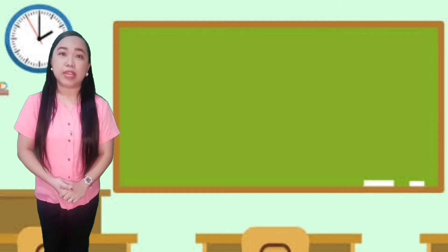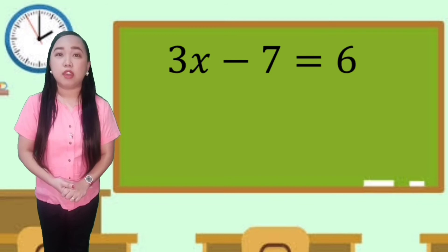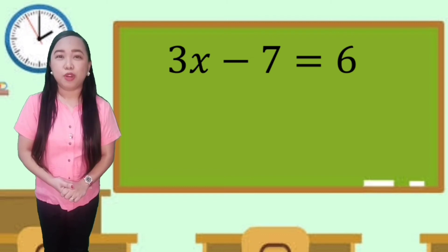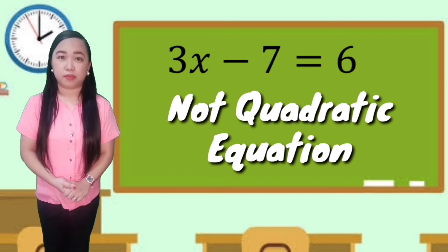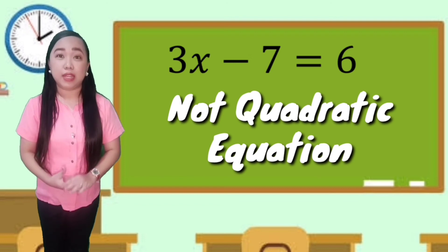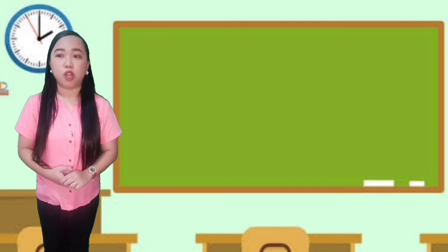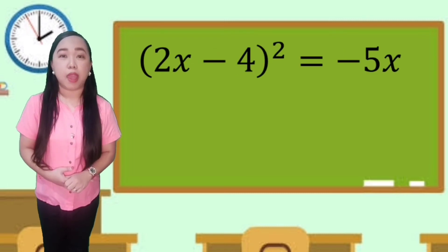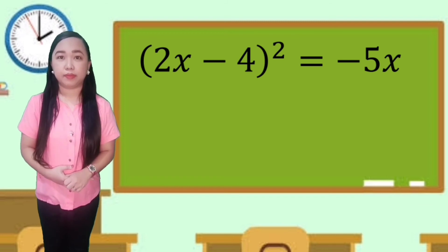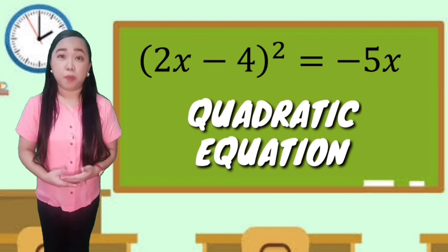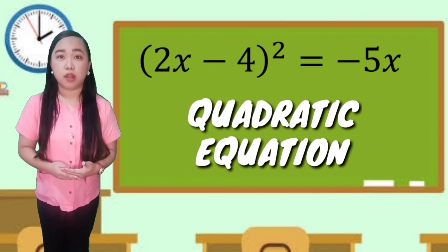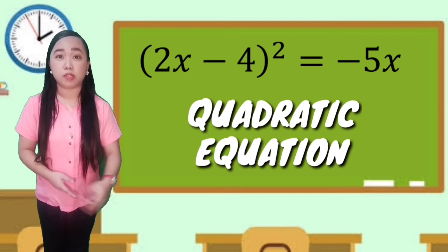For equation number 3, 3x minus 7 equals 6 — it is not a quadratic equation, because the degree is 1. For the fourth equation, the square of 2x minus 4 is equal to negative 5x — it is a quadratic equation. When we expand the square of 2x minus 4, the degree of the equation becomes 2.